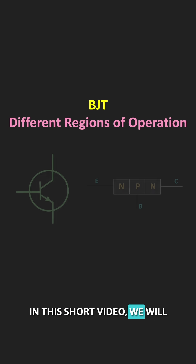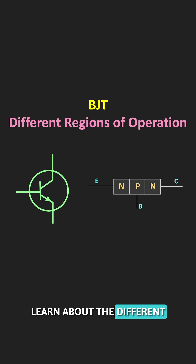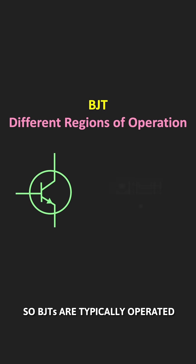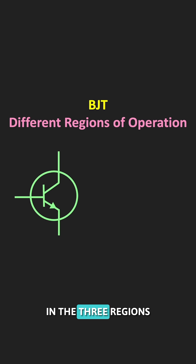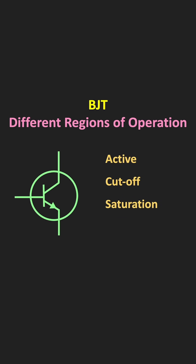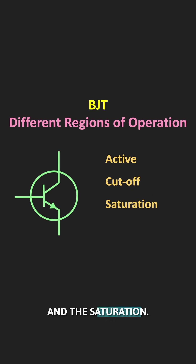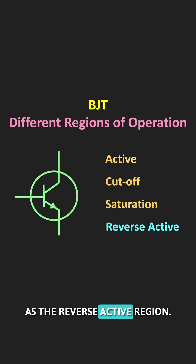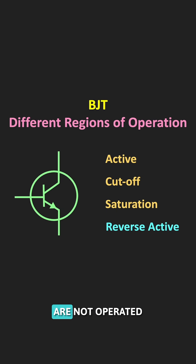In this short video, we will learn about the different operating regions of the BJT. BJTs are typically operated in three regions: active, cutoff, and saturation. Apart from that, there is also another region known as the reverse active region, but typically BJTs are not operated in this region.